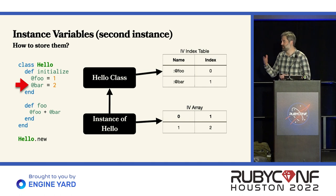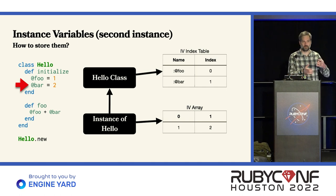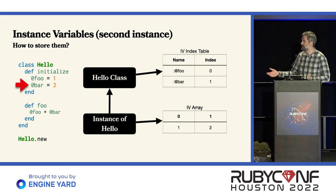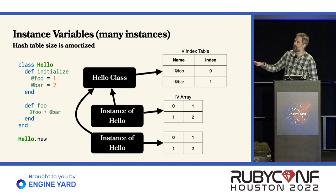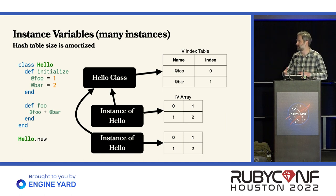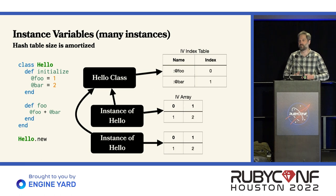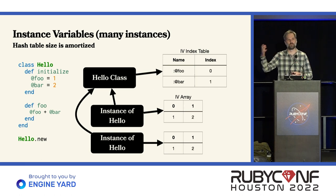You might be looking at this and thinking, well, you said hashes use memory — we still have a hash table here. That is true, yes. But we're able to amortize the cost of this hash table across multiple instances of Hello. Instead of having a hash table per instance, now we have one associated with the class, and all of these instances are able to take advantage of the fact that it's stored on the class instead of the instance.